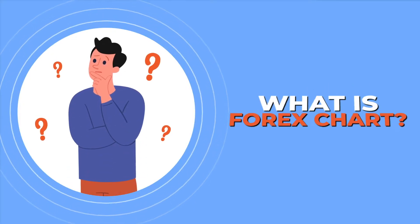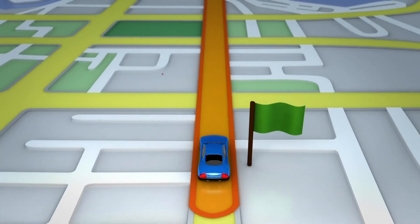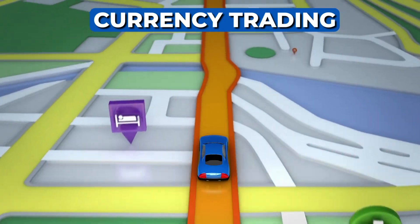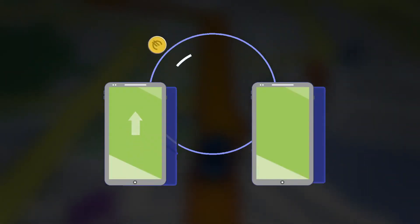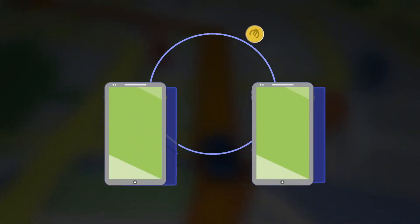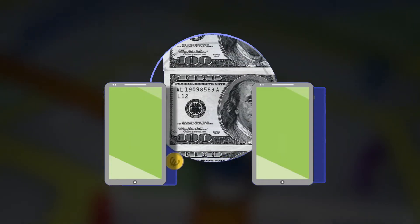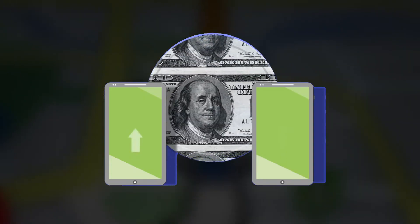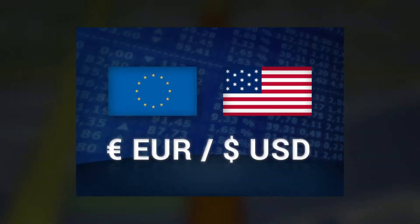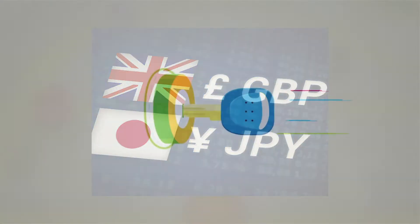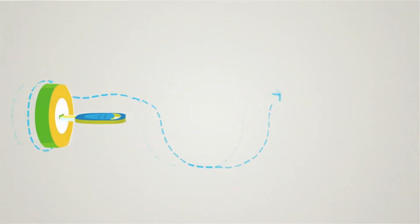So, what exactly is a Forex chart? Well, think of it as your roadmap in the world of currency trading. A Forex chart shows you the exchange rate between two currencies and how it has changed over time. Whether you're eyeing the EUR-USD, GBP-JPY, or any other currency pair, these charts are your key to understanding the markets.